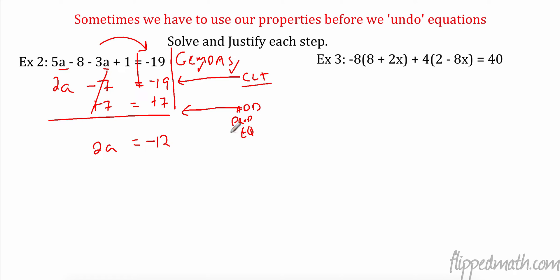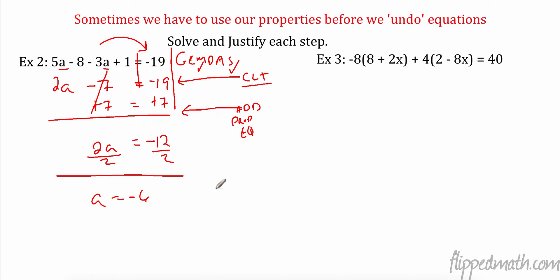The opposite of multiply is divide, so I'm going to divide by 2. That gives me a equals negative 6. And that is the division property of equality.